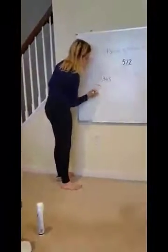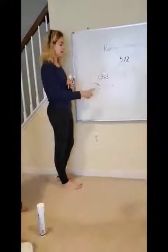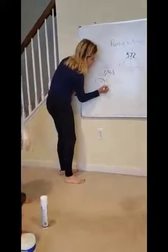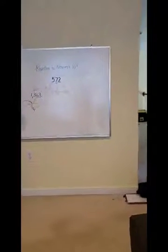Right. It comes before. So, we're going to round it to 1,360. Because right here, we know that 1,363 comes before 1,365.